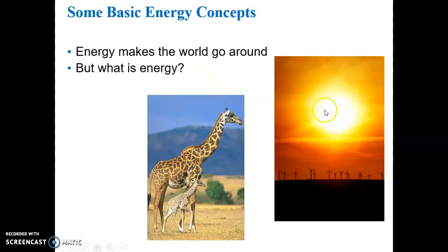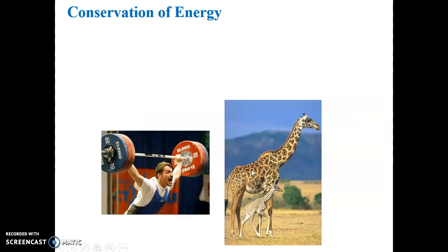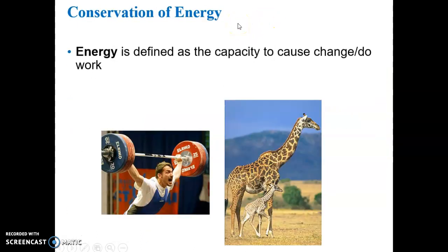The Sun is the source of energy on planet Earth for essentially all living things. Let's talk a little bit about conservation of energy and give a definition in terms of what energy means in biology. Energy can be defined as the capacity to do work or to cause change.